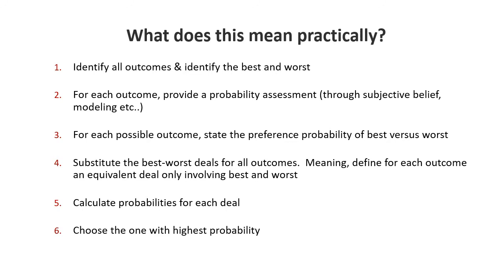So what do we then need to do to solve that equivalence rule practically? The first thing is to identify all outcomes and divide them into best and worst, which we just did. Then we do a probability assessment. Then comes the core of the equivalence rule: we state some preference for the two in-between options — options two and three — making an assessment of their preference based on how much we think they resemble the best and how much they resemble the worst.